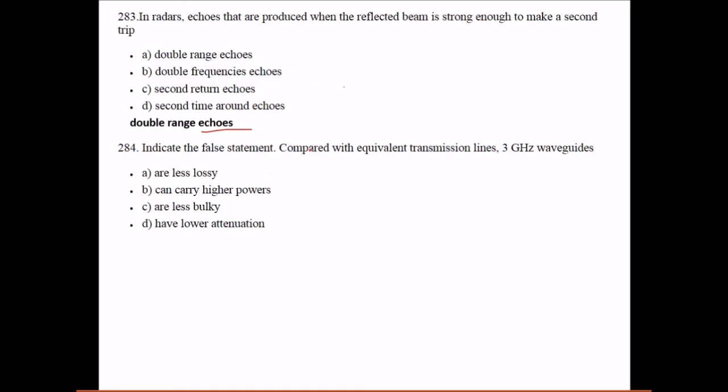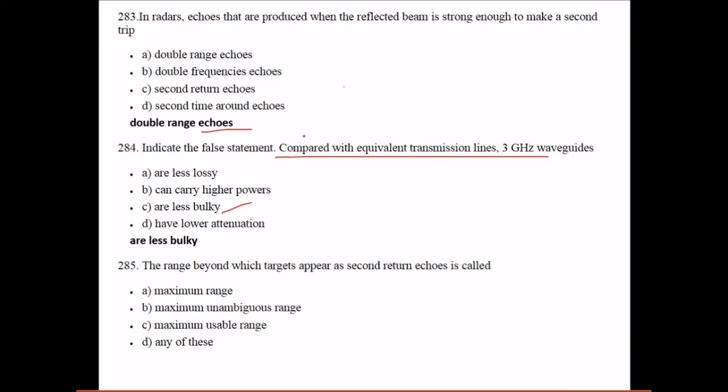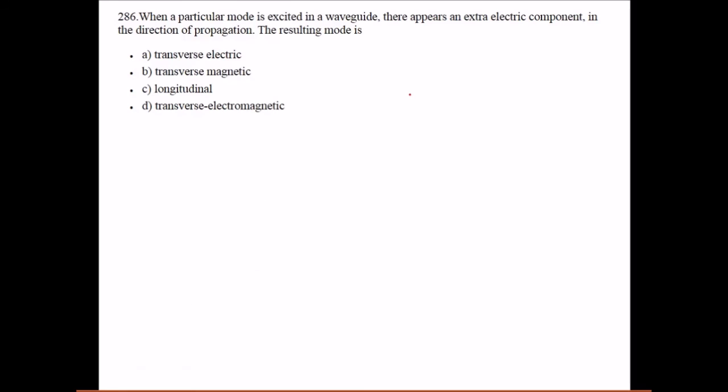We have to indicate the false statement: compared with the equivalent transmission lines at 3 gigahertz, waveguides are less bulky - this is a false statement, they are not bulky. The range beyond which targets appear as second return echoes is called maximum unambiguous range. When a particular mode is excited in a waveguide, then there appears an extra electric component in the direction of propagation - the resulting mode is transverse magnetic.